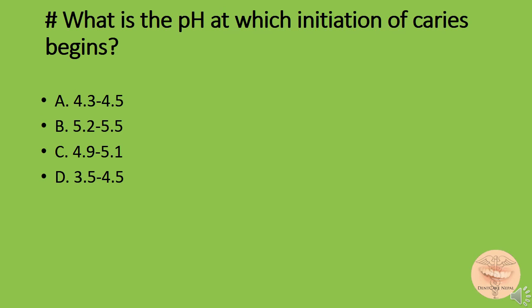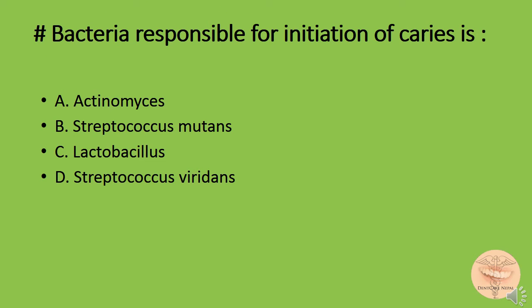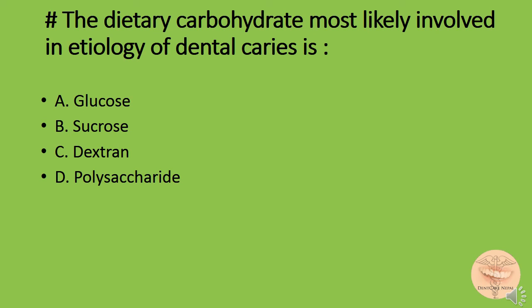What is the pH at which initiation of caries begins? Option A) 4.3 to 4.5, option B) 5.2 to 5.5, option C) 4.9 to 5.1, or option D) 3.5 to 4.5. The correct answer is option B: 5.2 to 5.5.